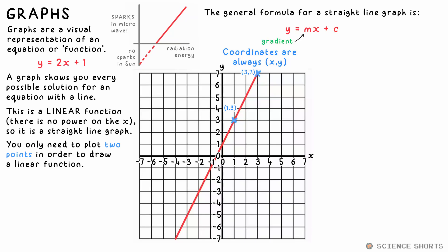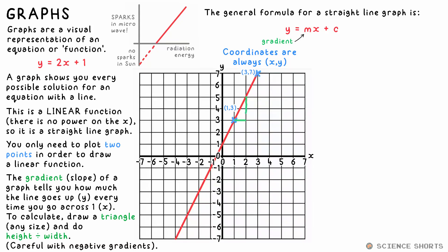m is the gradient or slope of the line. This just tells you how far up the line goes every time we go across one. So you can find the gradient of any line by making a right angle triangle using the line. It doesn't matter how big it is.